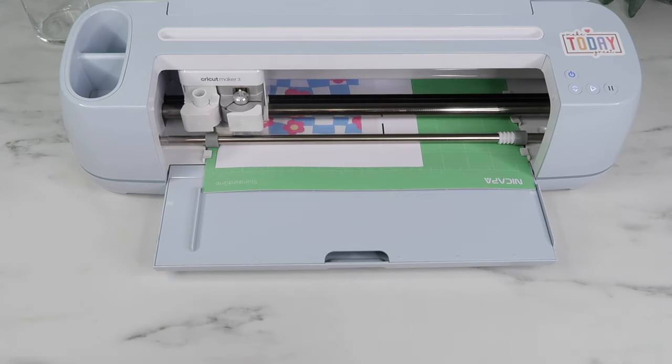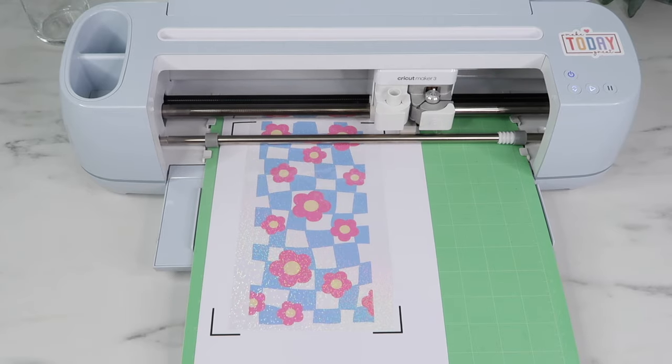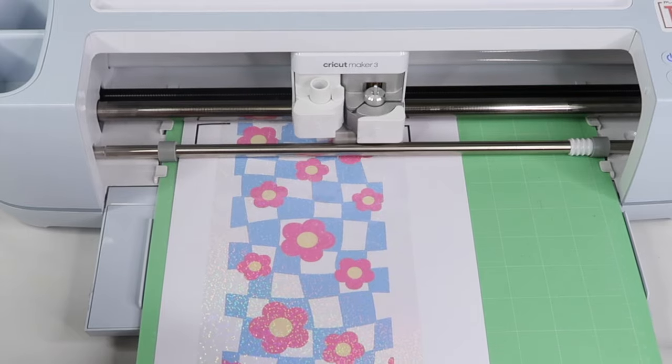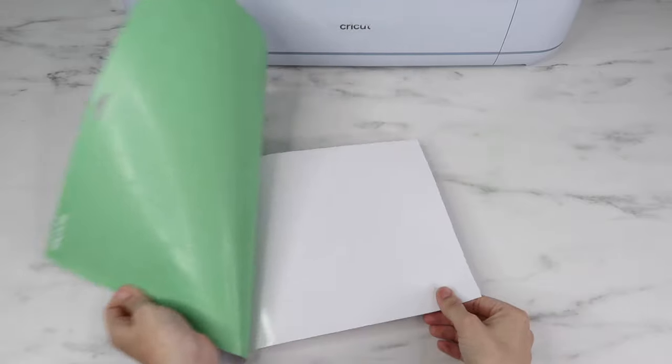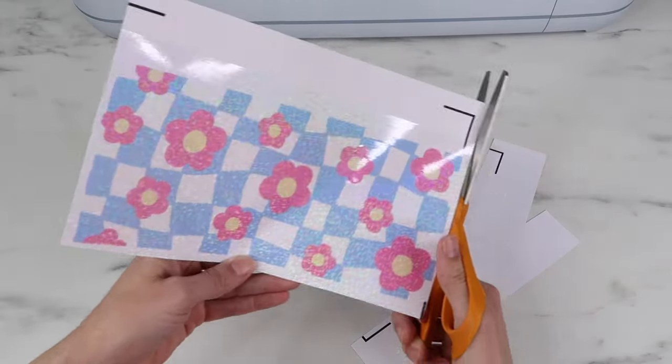The Cricut will read the black registration lines, then it will start cutting out my design. Once it's done, I unload my mat from the Cricut machine, then remove my paper. Then I grab my scissors and cut away all that excess paper that I will not be needing.